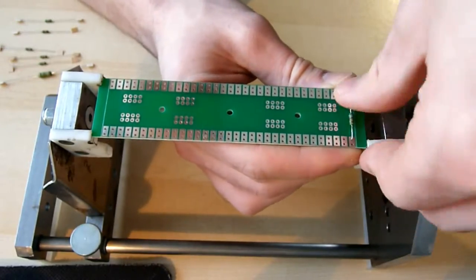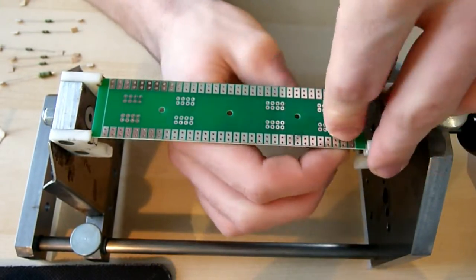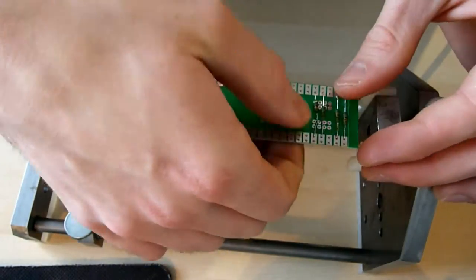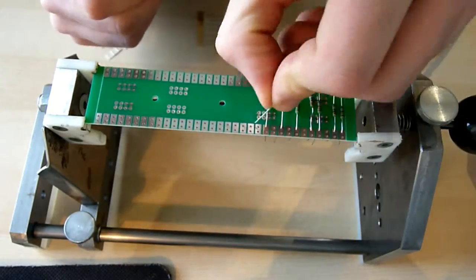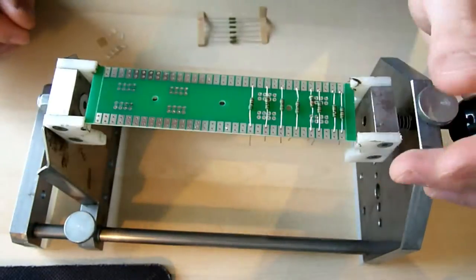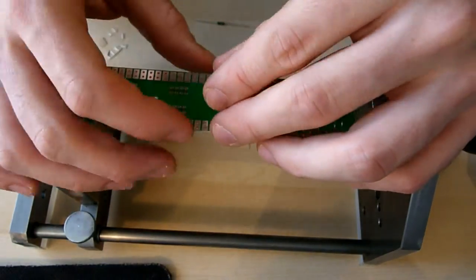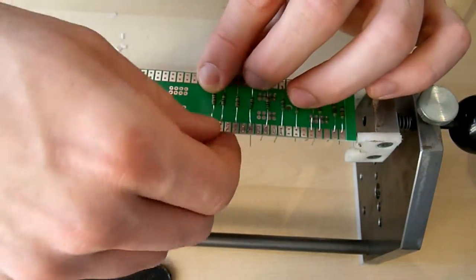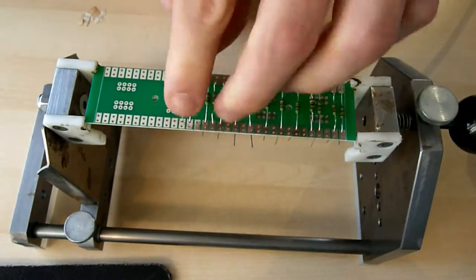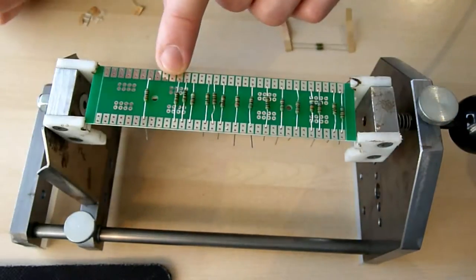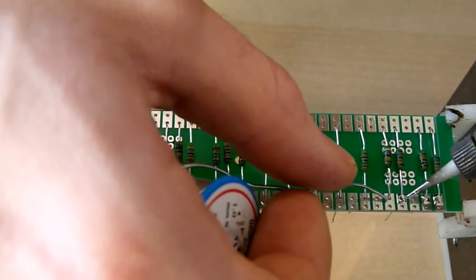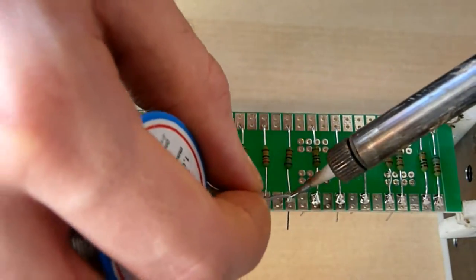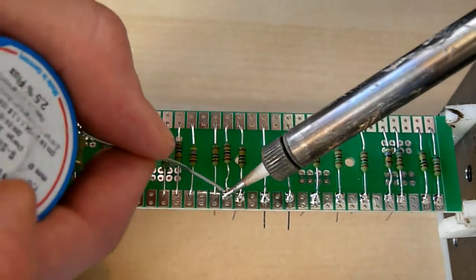I start with fitting in the resistors. Therefore I move from left to right on the wiring scheme to make no mistakes. I double checked everything before soldering. Then I soldered the resistors to the board. Make sure not to solder the outer holes. We need these afterwards for wiring and connecting.